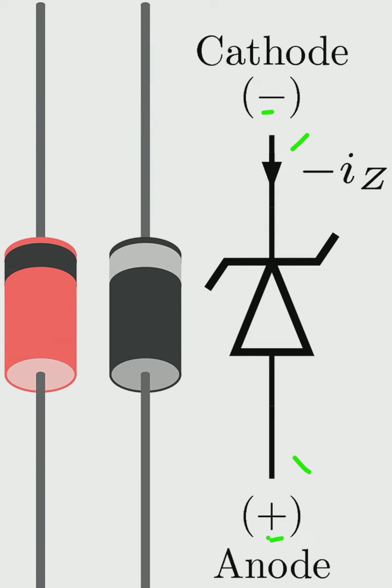When this Zener diode is forward biased, meaning you put a positive voltage on the anode and negative voltage on the cathode, it conducts current in forward bias just similar to a normal diode. However, the specialty of this diode is that it conducts current when it is reverse biased.